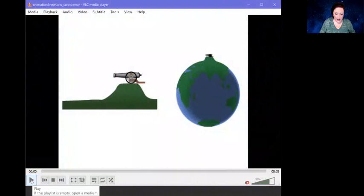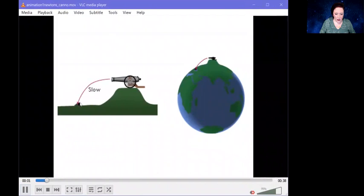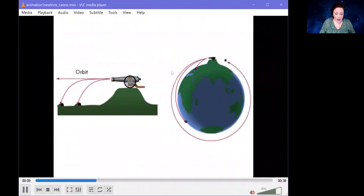So here I have a cannon set on a hill, and I'm going to shoot something out of it. And if it's slow, it doesn't go very far. If I shoot a little faster, it's going to go a little bit further. But if I shoot it fast enough, now it's just going to keep going around and around and around. Obviously, it's going to hit the back of the cannon, which is a problem. But basically, if I can shoot it fast enough, I can get it to go in orbit. And this is basically what circular velocity is.